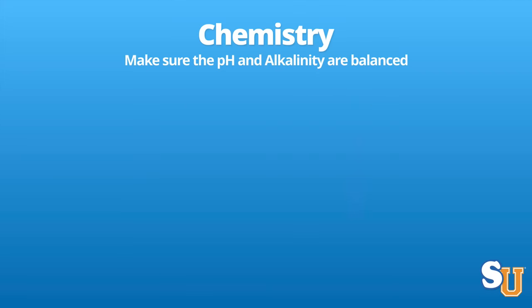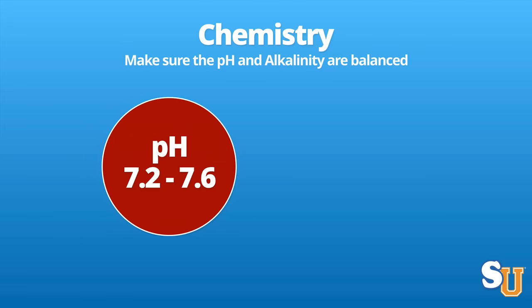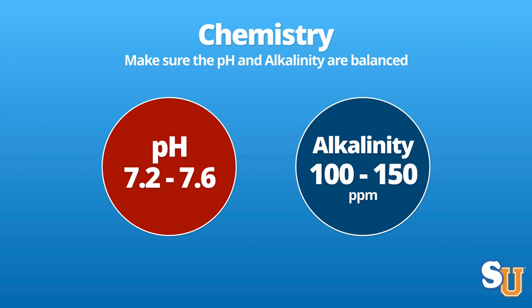The readings you want to look out for — first, pH and alkalinity. No matter what sanitizer you use — salt, chlorine, bromine, biguanide, minerals, whatever — everyone has to deal with pH and alkalinity. You want to keep your pH between 7.2 and 7.6, and keep your alkalinity between 100 and 150 parts per million. If you keep your pool balanced within these ranges, you are doing 90% of the work. With good balanced water, all the other chemicals will work much, much better.